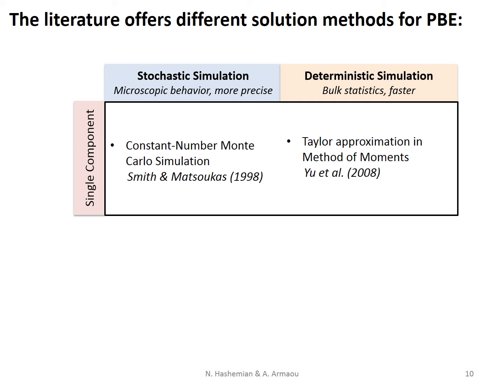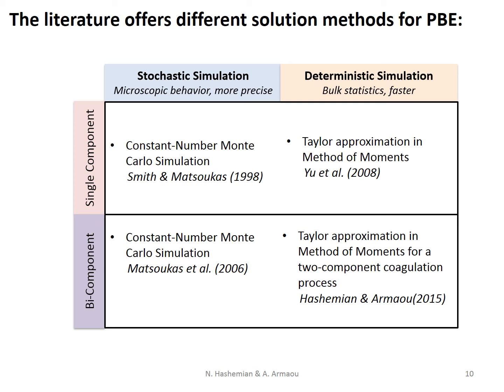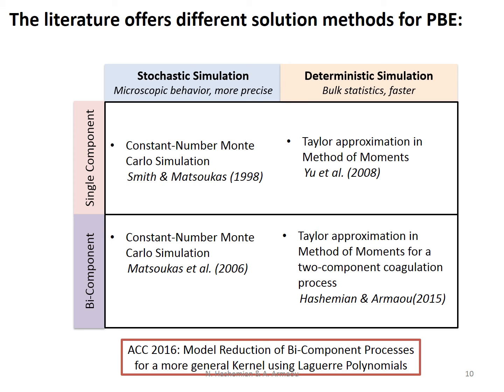Yu and his colleagues employ Taylor expansions to approximate the distribution moments of the system and derive a deterministic model. However, in agglomeration processes, the composition of particles is important as well. So Matsukas extended this stochastic simulation method for bicomponent coagulation. In a previous work, we exploited that idea for bicomponent coagulation processes to obtain a deterministic reduced order model. However, the Taylor expansions of moments cannot be used for problems with composition-dependent kernel functions. As a result, in this work, we used Laguerre polynomials to approximate the implicit governing equation with an ODE set.